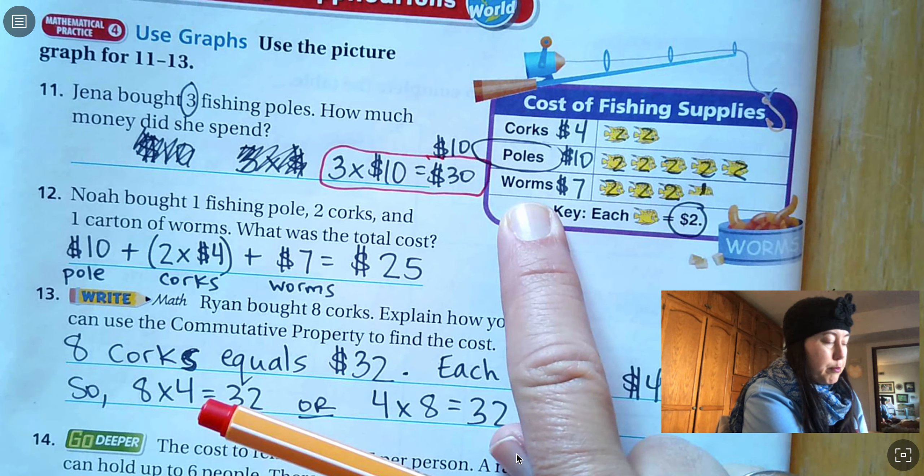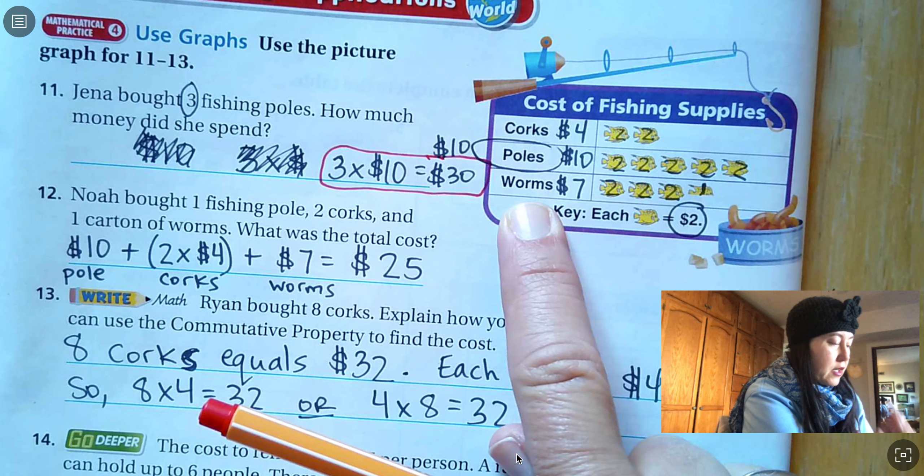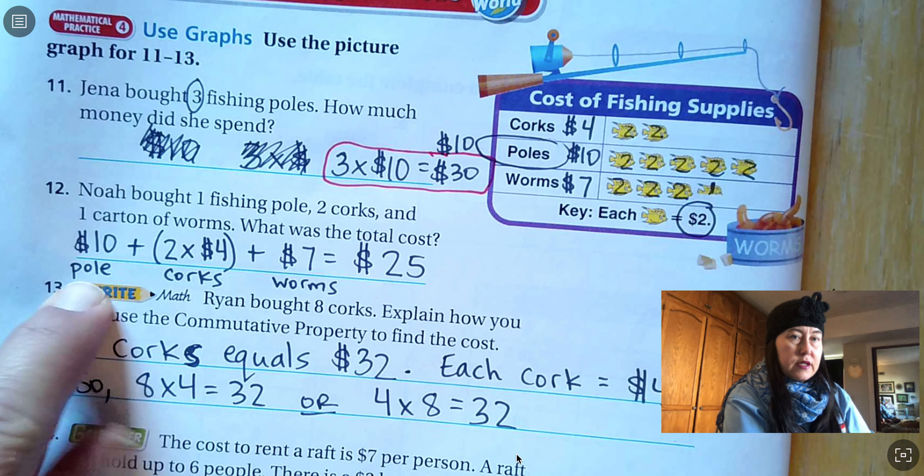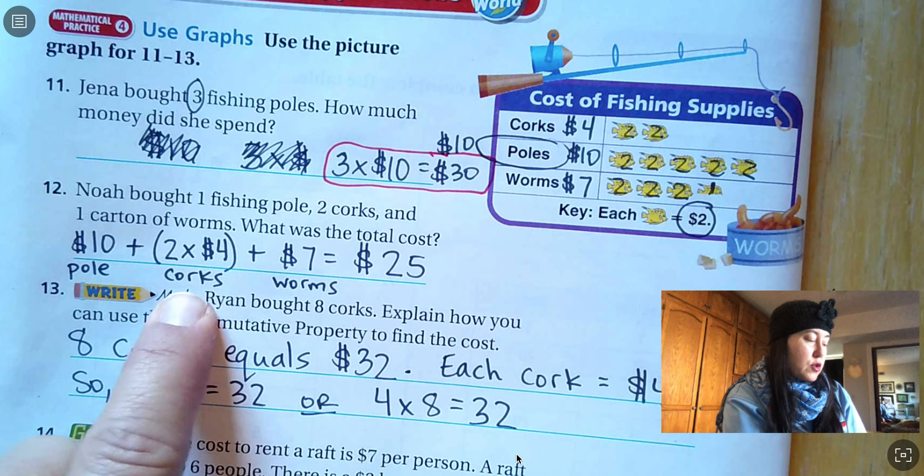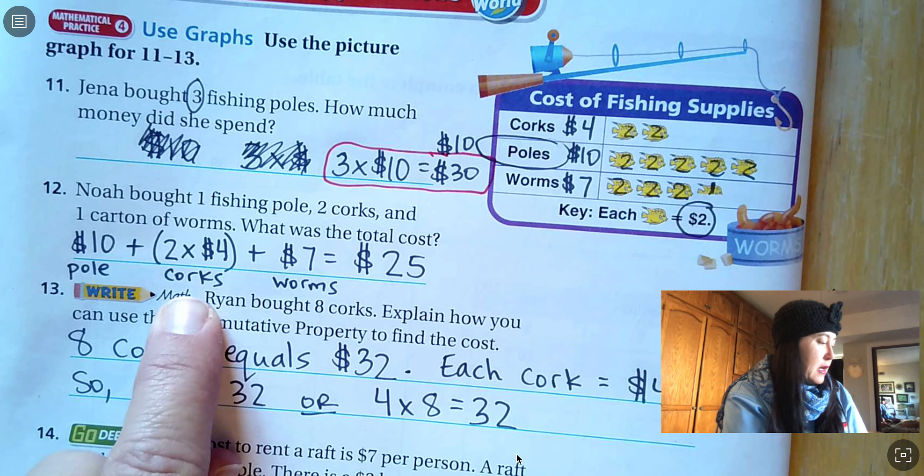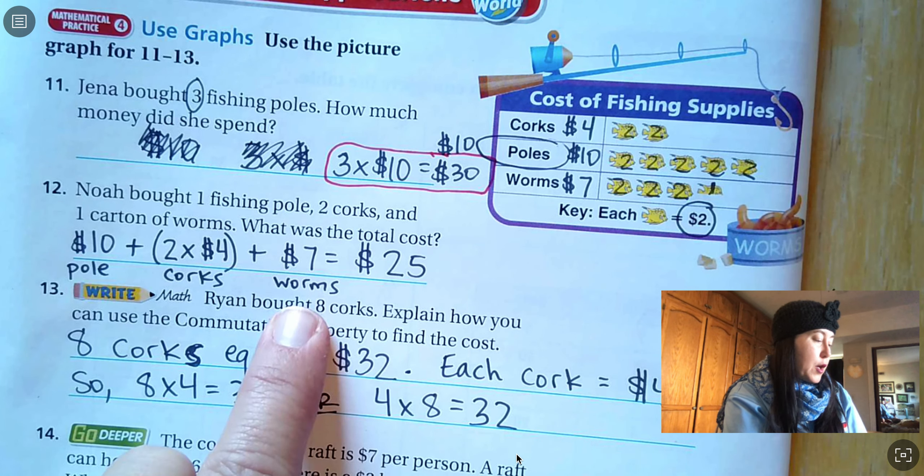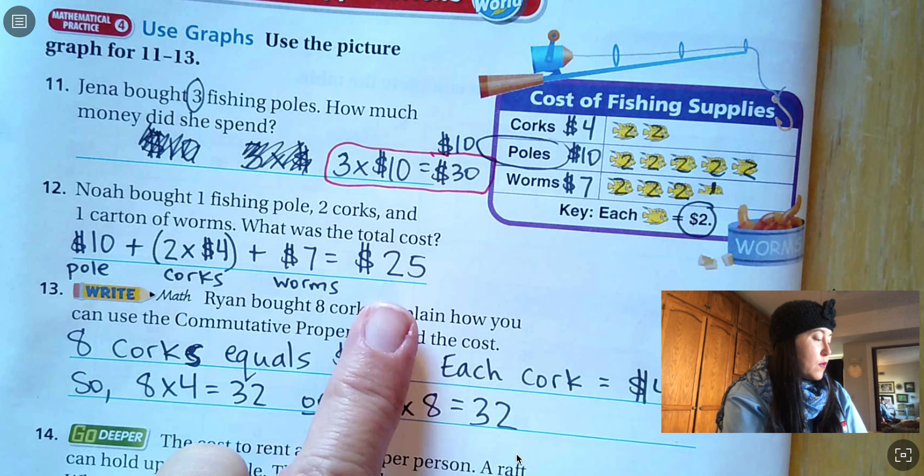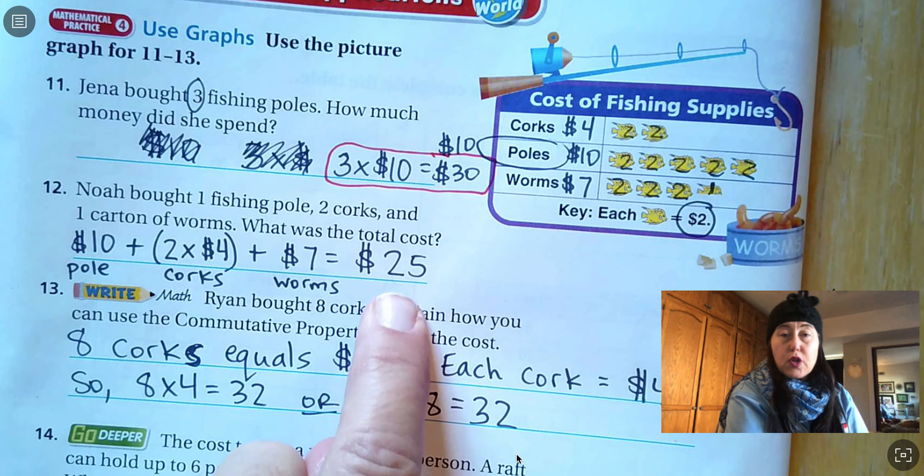Worms, like a bucket of worms, costs two, four, six and a half of a picture. So that's one, right? So seven dollars for a bucket of worms. Now number 12. Noah bought one fishing pole, ten dollars. Two corks, two times four is eight. And one carton of worms, seven dollars. What was the total cost? He spent twenty-five dollars. It's a good day of fishing. Hopefully he caught a lot.